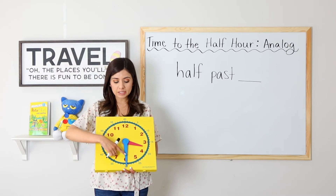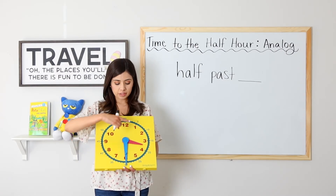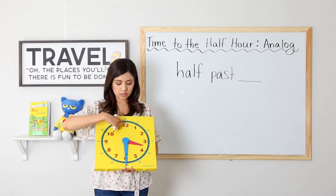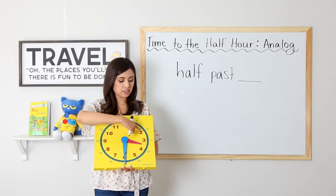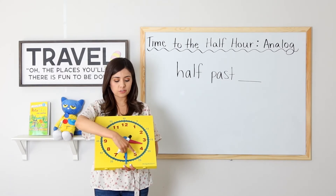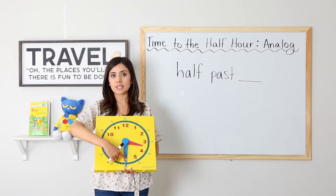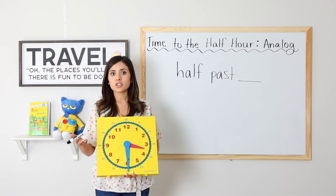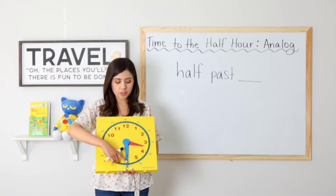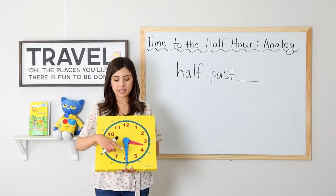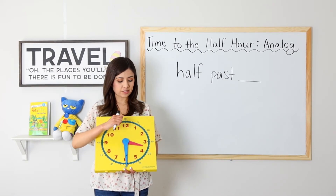It has not touched four yet, so the hour is still three. When the minute hand touches the six, it is thirty. We start at twelve, zero, and count by fives: zero, five, ten, fifteen, twenty, twenty-five, thirty. When the minute hand touches the six, it is thirty. So here we have three thirty. We can also say half past three.